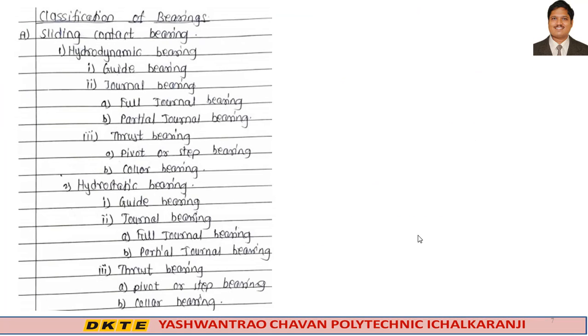Classification of bearings: the first type is the sliding contact bearing, and sliding contact bearing has two types: first is the hydrodynamic bearing and second is the hydrostatic bearing.